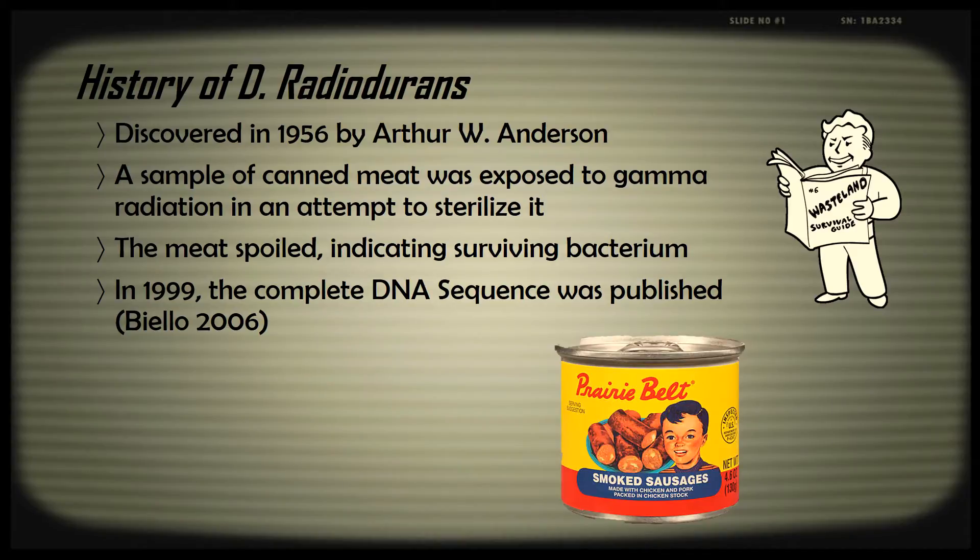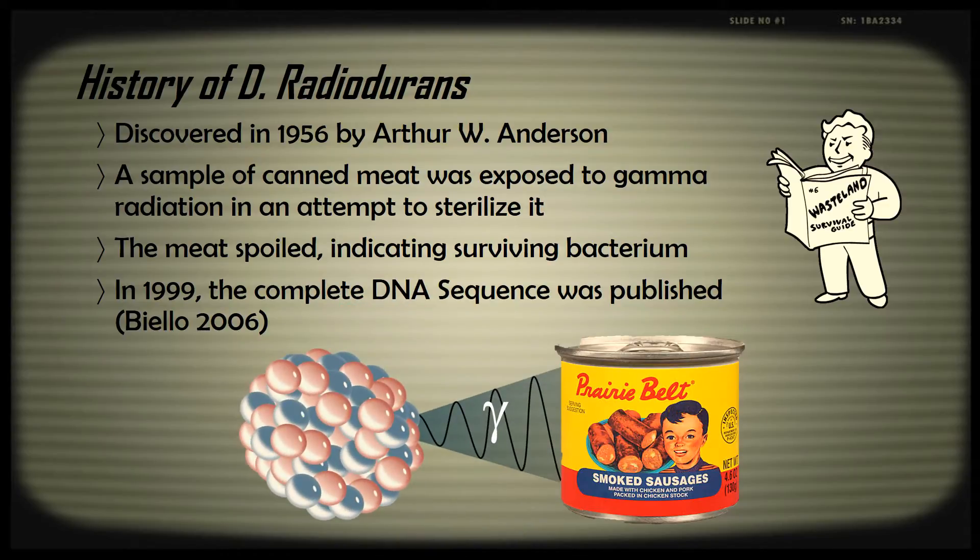Now we'll move on to a brief history of D. radiodurans. Deinococcus radiodurans was first discovered in 1956 by Arthur W. Anderson at the Oregon Agricultural Experiment Station in Corvallis, Oregon. A sample of canned meat was exposed to high doses of gamma radiation in an attempt to sterilize and therefore preserve it. The meat later spoiled, indicating the presence of a surviving bacterium, later dubbed Deinococcus radiodurans.